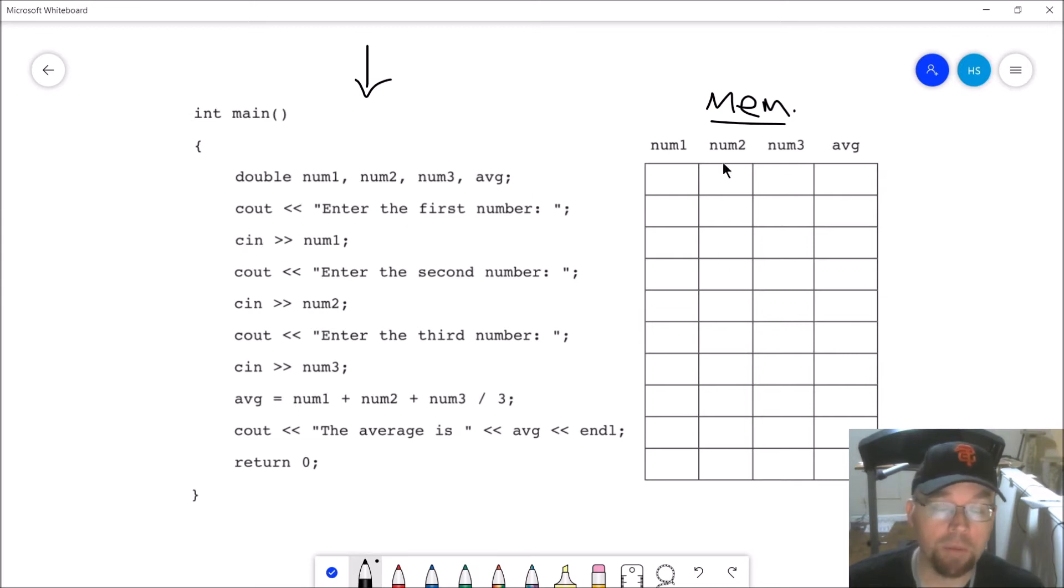At some point, hopefully it becomes obvious where the problem is. Now here's another thing too: if you really want to make sure that you understand what the code is doing, or double check that you understand how division works or what this statement means, this is a good way of doing it.